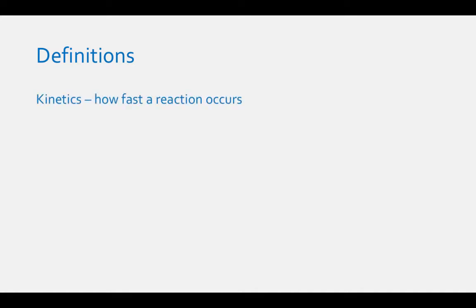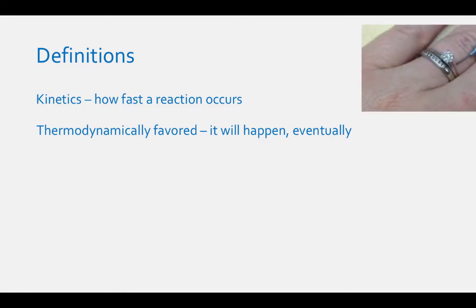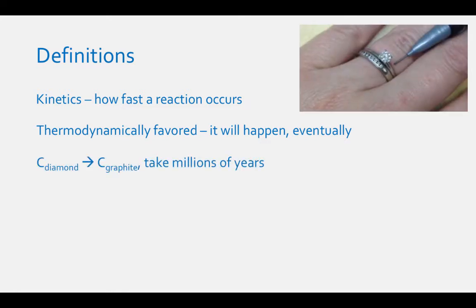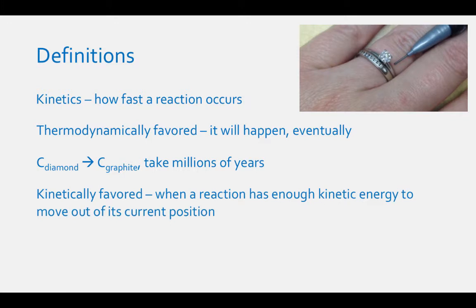Let's start off by defining some common terms we will use for this topic. Kinetics is the study of how fast a chemical reaction occurs. If something is thermodynamically favored, this means it will happen eventually. Take for example the chemical reaction of carbon diamond resulting in carbon graphite. This reaction is thermodynamically favored — it will eventually happen, but it will just take millions of years. So therefore, this reaction is not kinetically favored. Kinetic favoring happens when a chemical reaction has enough kinetic energy to move out of its current position. Carbon diamond will not move out of its current position, so don't worry about selling any of your jewelry.